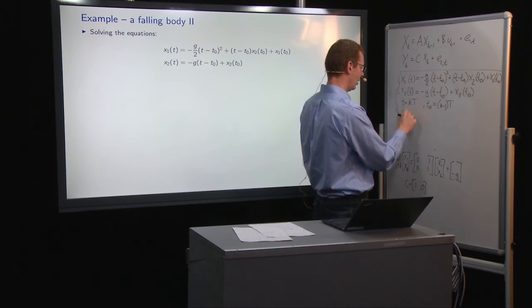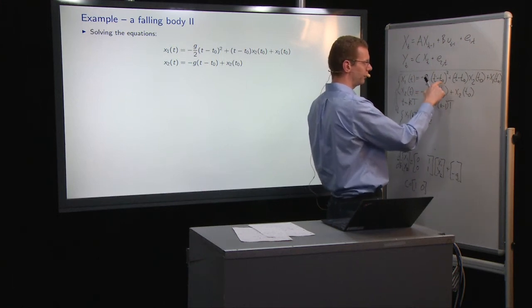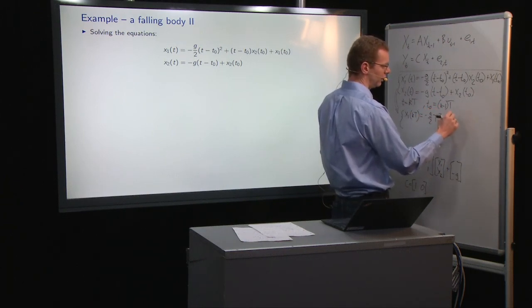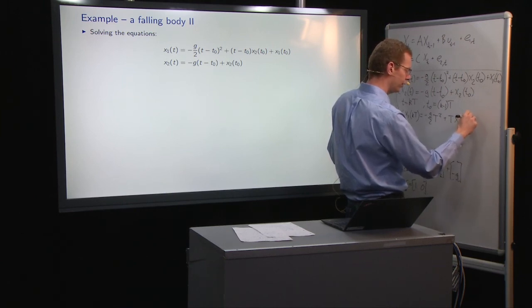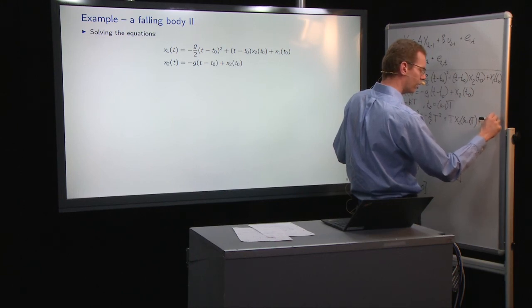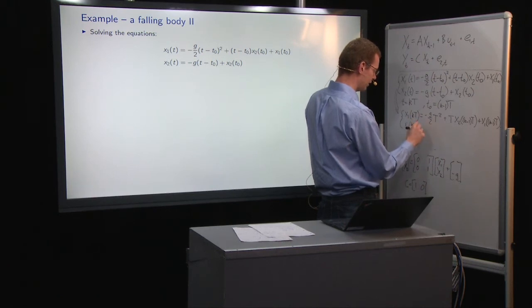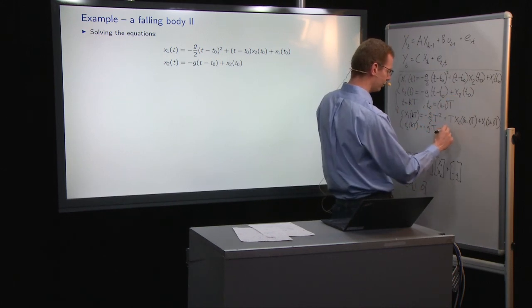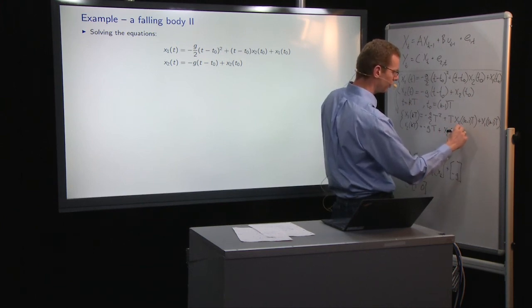We have x1 of kt equals minus g half, and the difference in time is just uppercase T, because we just have one sample difference. So that's x2 of k minus 1, t, plus x1 of, and then the argument is the same, k minus 1, uppercase T. And for the velocity equation, x2 of k, uppercase T, that's equal to minus g, T, plus the previous value of x2, that's x2 of k minus 1 times T, like that.